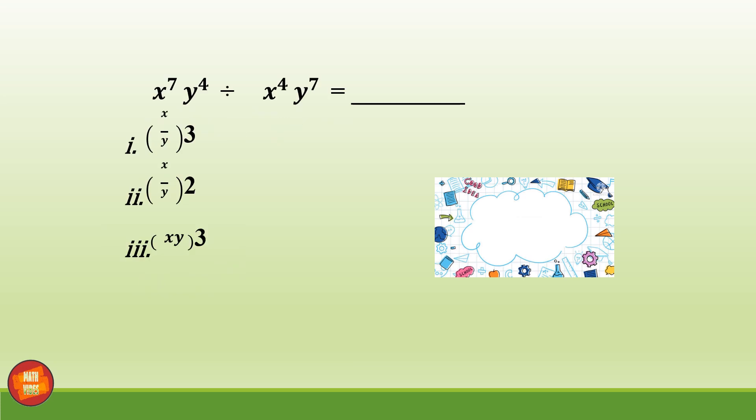Next question, x raised to power 7 y raised to power 4 divided by x raised to power 4 y raised to power 7 is equal to, and option 1 is the correct answer.